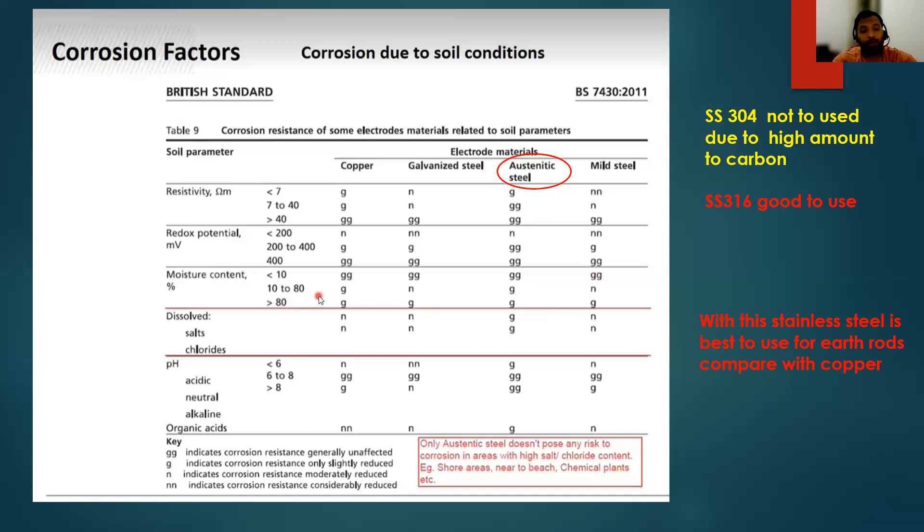austenitic steel slightly reduced, and mild steel moderately reduced. If you see all those parameters, which material is good? Austenitic steel is very good, and after that copper is good, then mild steel, then galvanized steel. Based upon this, you have to select your earth electrode.